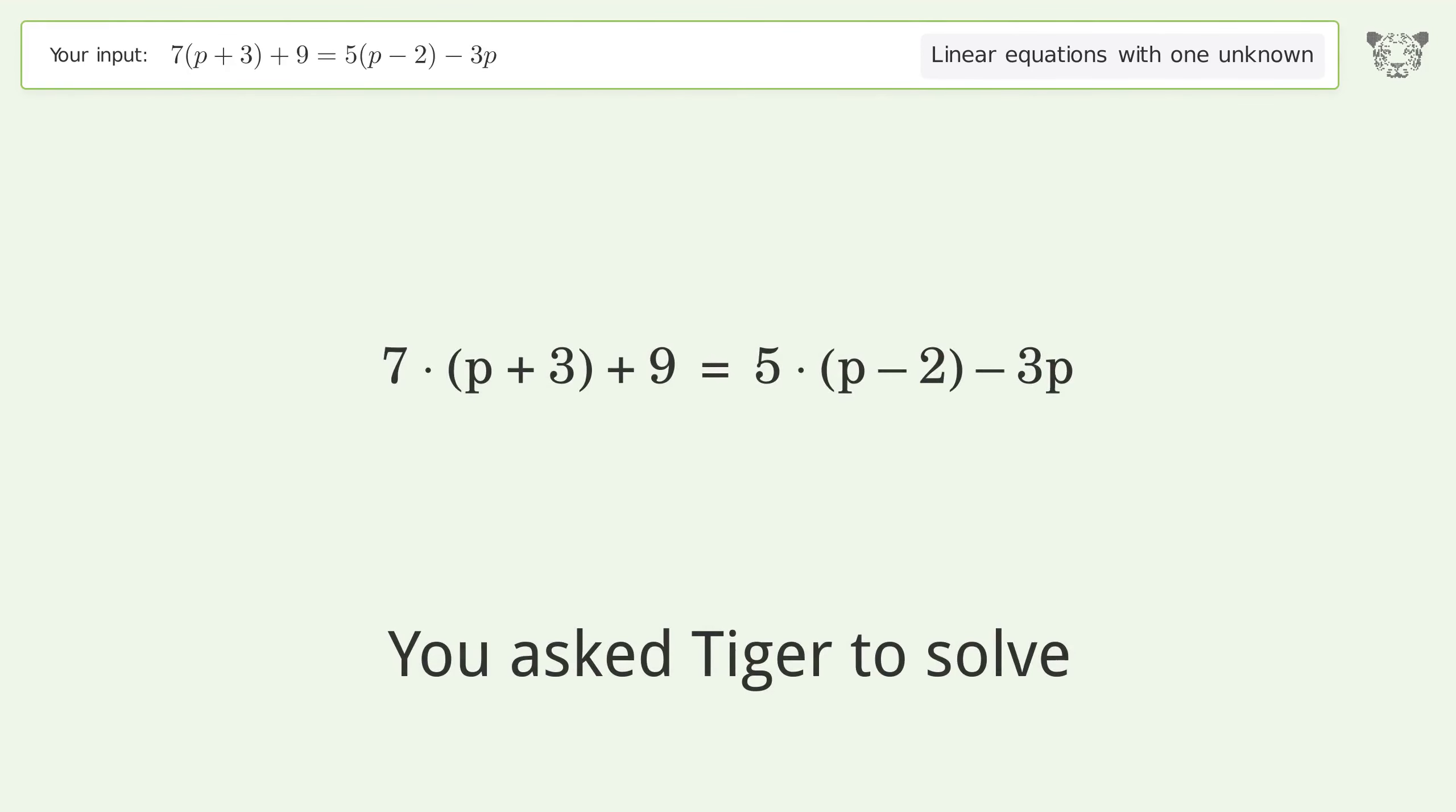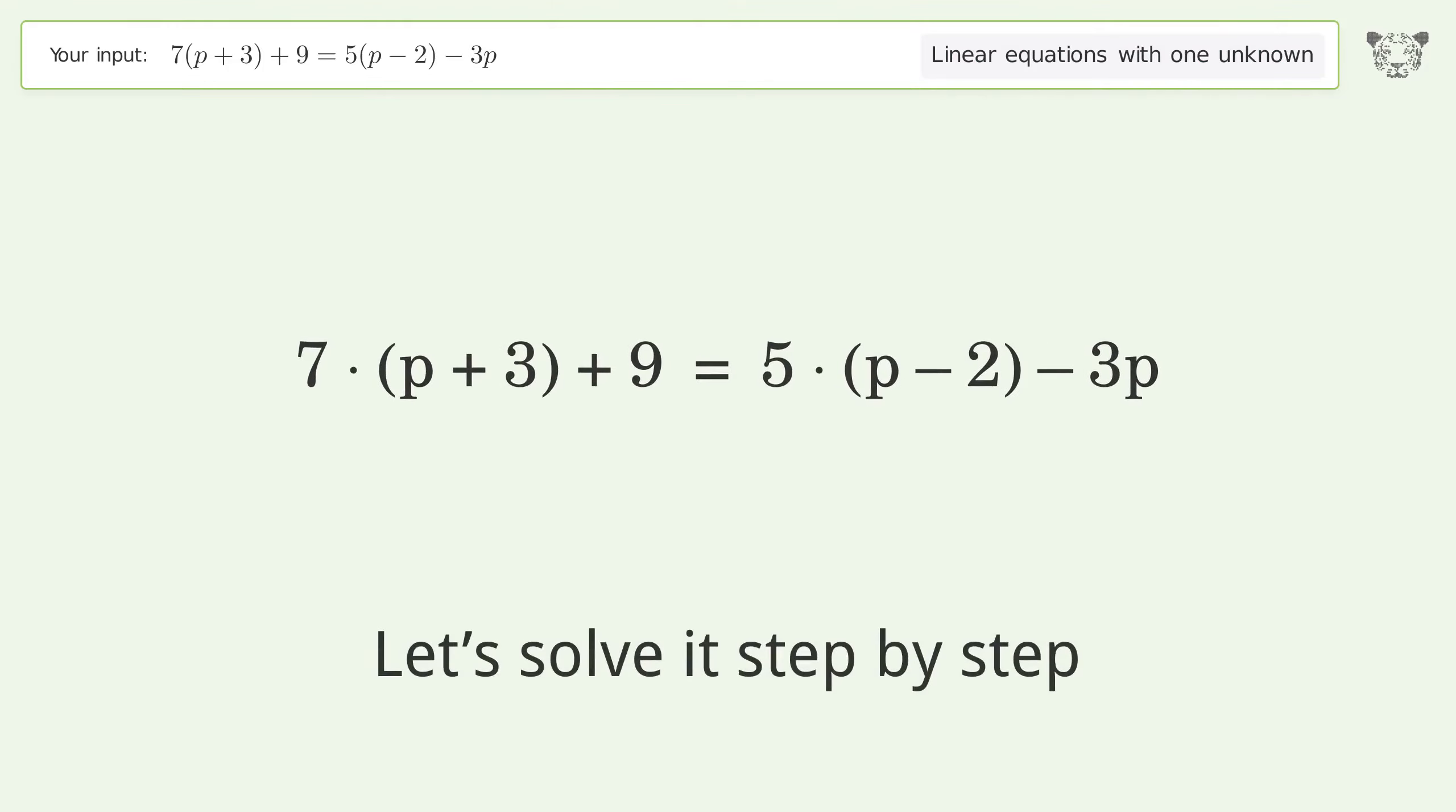You asked Tiger to solve this. This deals with linear equations with one unknown. The final result is p equals negative 8. Let's solve it step by step. Simplify the expression.